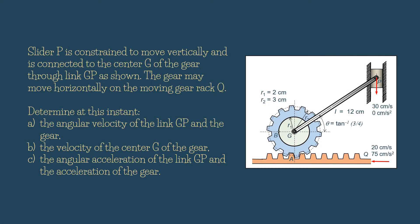Slider P is constrained to move vertically and is connected to the center G of the gear through link GP as shown. The gear may move horizontally on the moving gear rack Q. Determine at this instant: A, the angular velocity of the link GP and the gear; B, the velocity of the center G of the gear; C, the angular acceleration of the link GP and the acceleration of the gear.